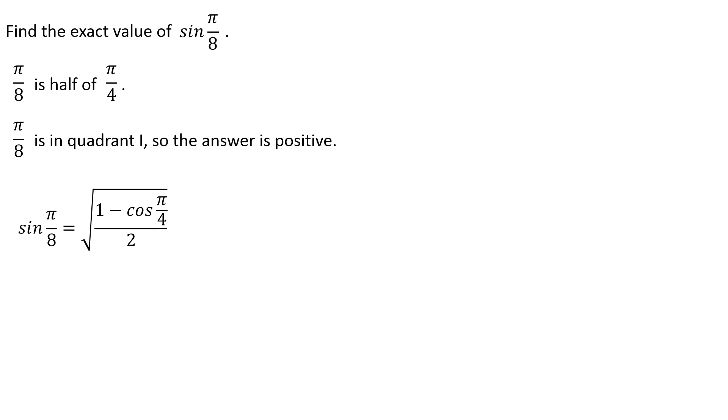Of course, cosine of π over 4, that's easy. That's root 2 over 2. 1 subtract root 2 over 2. Need a common denominator. Number 1 is secretly 2 over 2. Common denominator, I can combine those 2. 2 subtract root 2 over 2, over 2, inside the square root symbol.